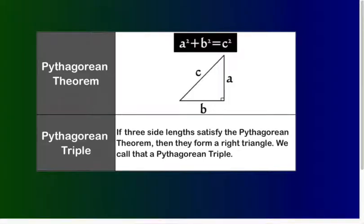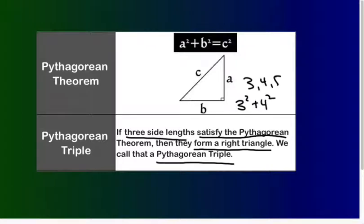So Pythagorean Theorem we talked a little bit about before. If three side lengths follow Pythagorean Theorem, then they form a right triangle. We call that a Pythagorean triple. So three side lengths that work perfectly. One of the simplest ones is just like 3, 4, and 5. So 3 squared plus 4 squared equals 5 squared. That's a true mathematical statement right there. That's what we consider a Pythagorean triple.